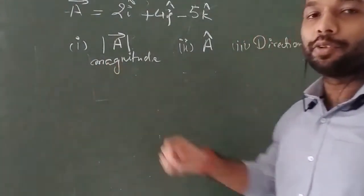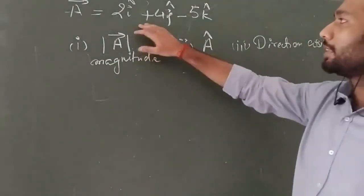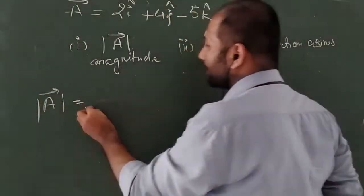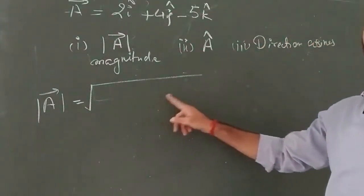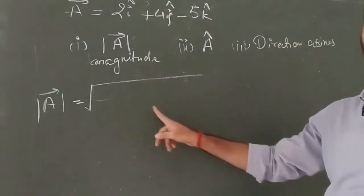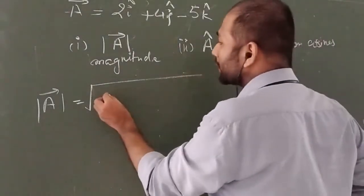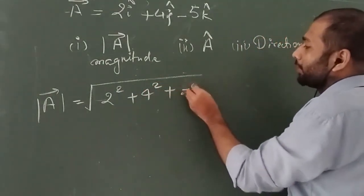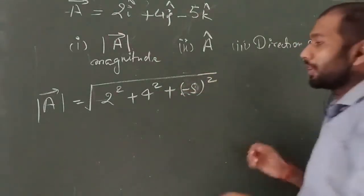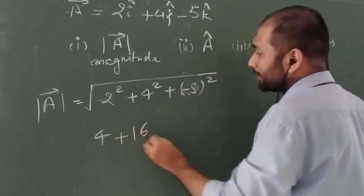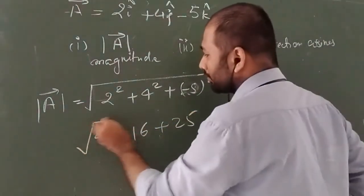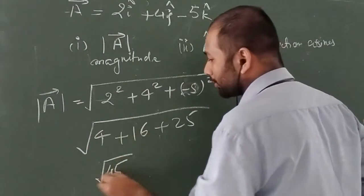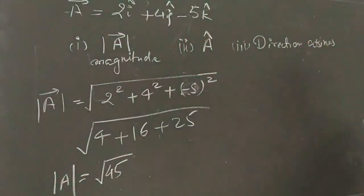Let us find the magnitude first. If a vector is given in rectangular form, to find the magnitude we take the square root of the sum of squares of each component. So we get √(2² + 4² + 5²) = √(4 + 16 + 25) = √45. This is the magnitude of A.